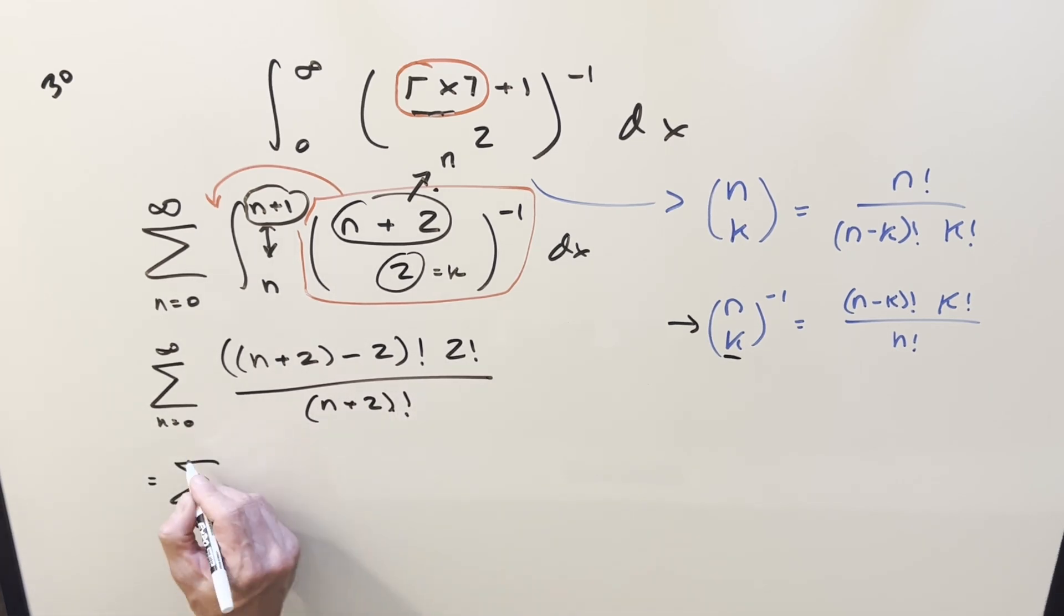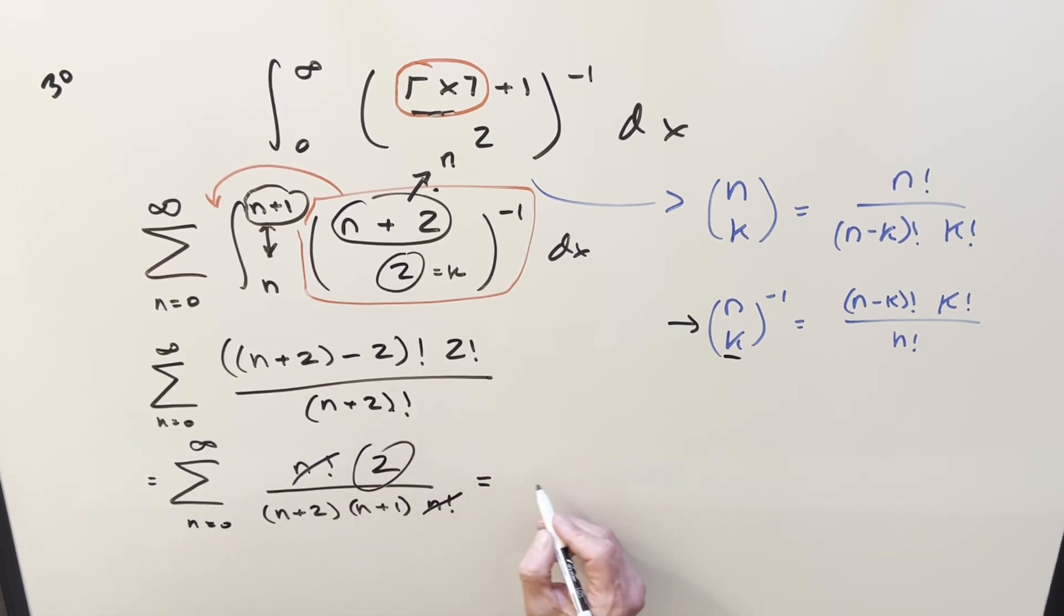But now let me just clean it up a little bit before we simplify. So n plus two minus two, that's just going to be n factorial. Two factorial is just two, right? Two times one. So we have a two right there. Then here, n plus two factorial, let me expand that out. So n plus two factorial, I'll write is n plus two times n plus one times n factorial. That way we get cancellation here and here. And now let me just clean it up a little bit more. So the two I can take up front as a constant. So we'll bring that in front of the sum here.